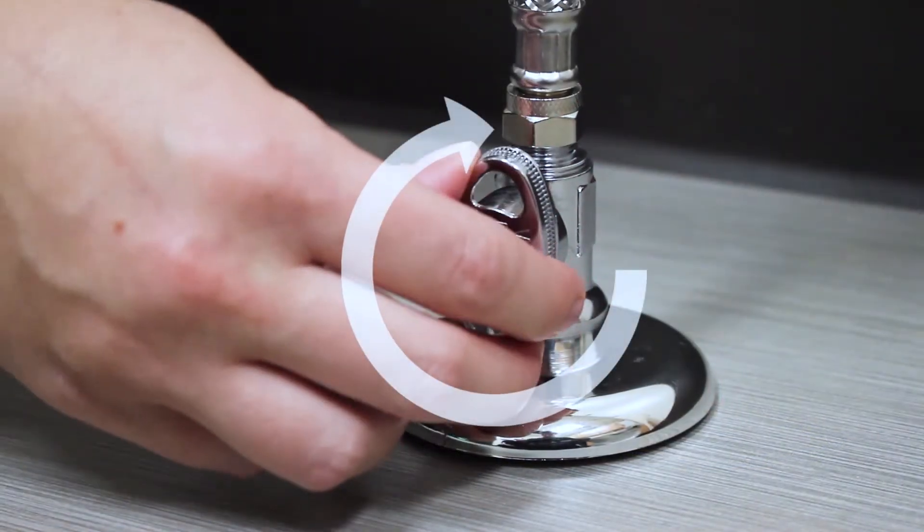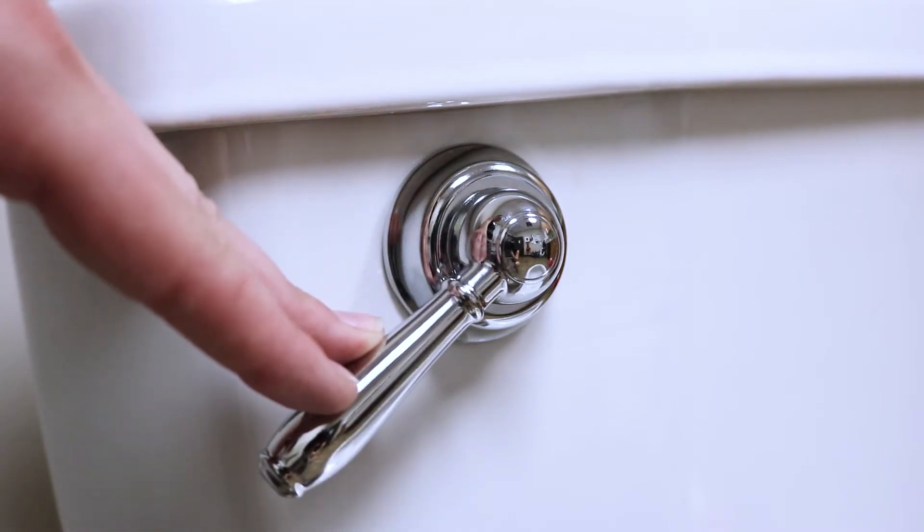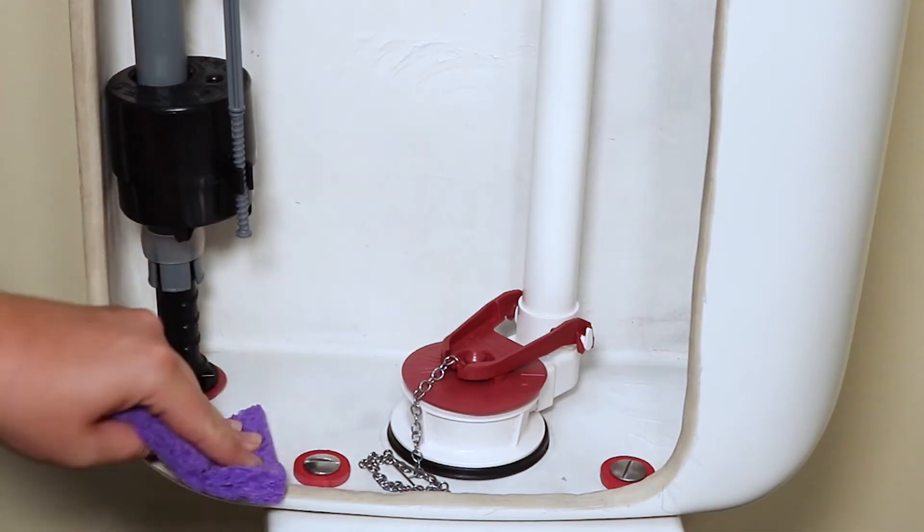The first step is to shut off the water supply to your toilet. Hold the handle down to drain the excess water. Sponge out the remaining water in your toilet tank.